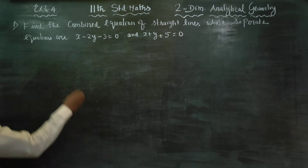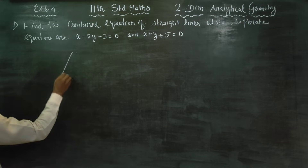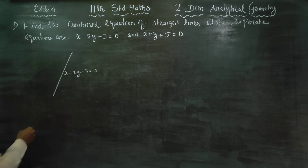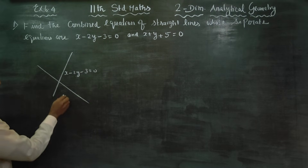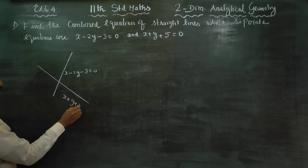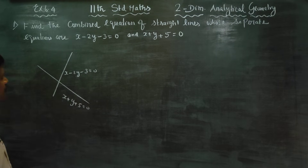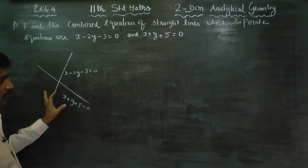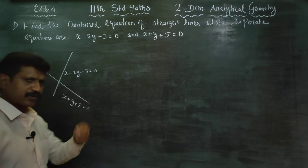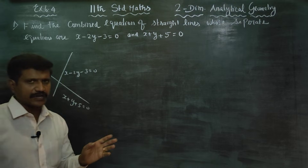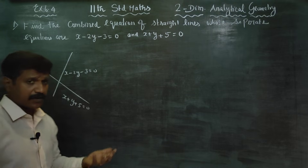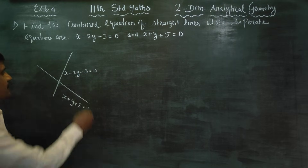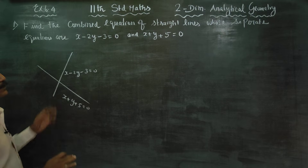Combined equations of the straight line — meaning the pair of straight lines. The two equations are x minus 2y minus 3 is equal to 0, and x plus y plus 5 is equal to 0. These two straight lines may be intersecting, parallel, or perpendicular. These two lines together form a pair of straight lines.